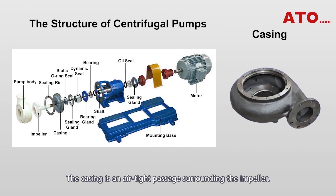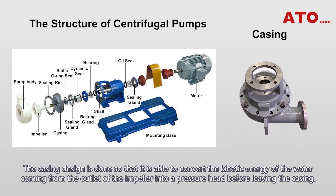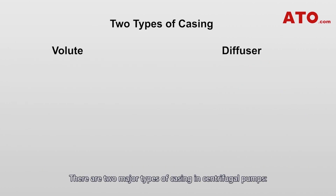The casing is an airtight passage surrounding the impeller. The casing design converts the kinetic energy of the water coming from the outlet of the impeller into a pressure head before leaving the casing. There are two major types of casing in centrifugal pumps.